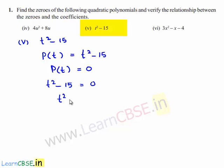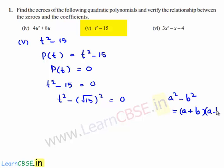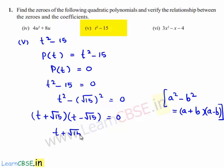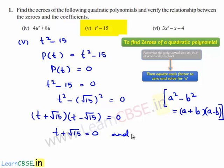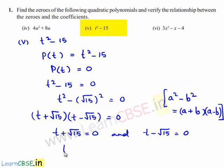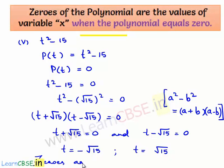We can say that t squared minus root 15 whole squared is equal to 0. This is in the form of a squared minus b squared, which is equal to a plus b times of a minus b. So this can be written as t plus root 15 times of t minus root 15 equals 0, giving t equal to minus root 15 and t equal to plus root 15. Therefore, the zeros of the polynomial are plus or minus root 15.